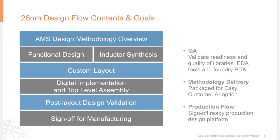Why does a foundry like Global Foundry's develop reference flows? There are really three goals. The first is to QA the collateral we're providing the customer — we want to make sure that the EDA tools, our process design kit, and third-party IP work seamlessly together when delivered. The second goal is to deliver methodology, design guidelines, and recommendations to the customer, packaged for easy adoption. For example, at 28 nanometer, layout-dependent effects introduce different design considerations, and the flow captures how best to handle these. Finally, we consider this a production flow — it contains all steps the customer needs to perform before taping out to Global Foundries.